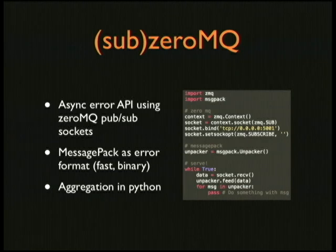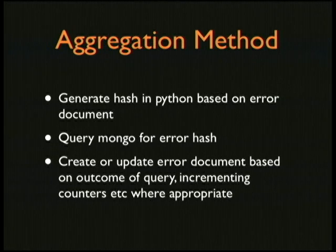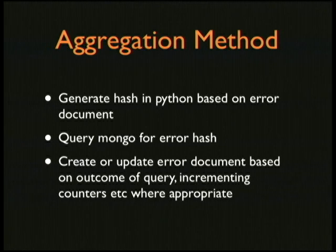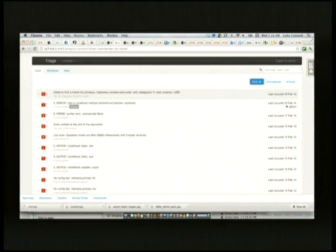I would definitely recommend playing with 0MQ if you get a chance. Aggregation is now happening in Python space at write time. It's a bit of a naive approach — we generate a hash, query for the existence of a row, and if the row is there we update it; if not, we insert one.